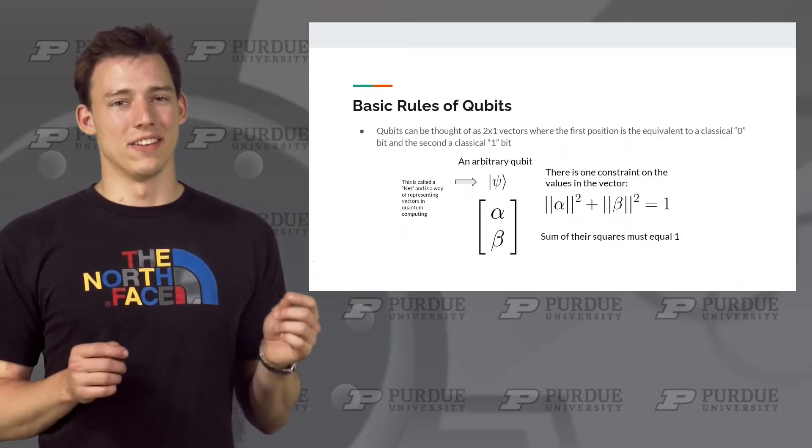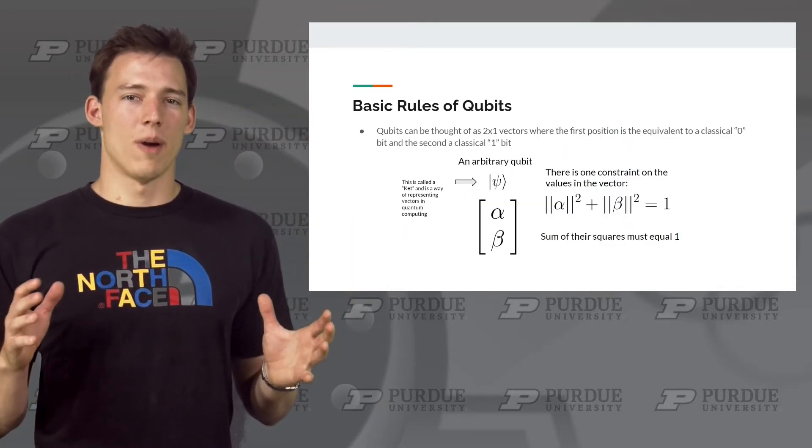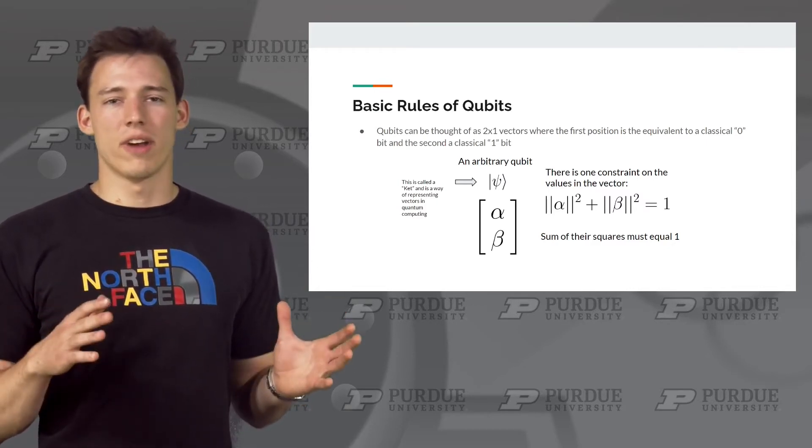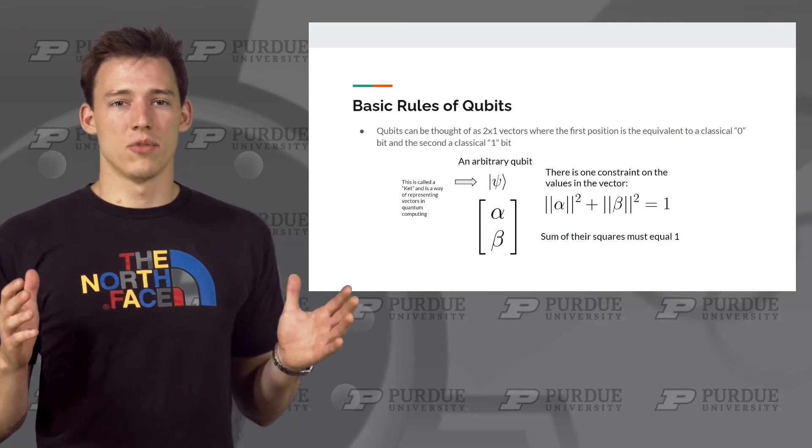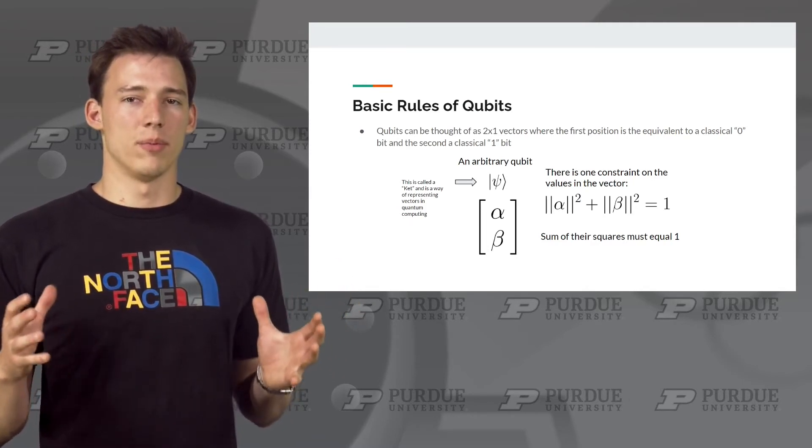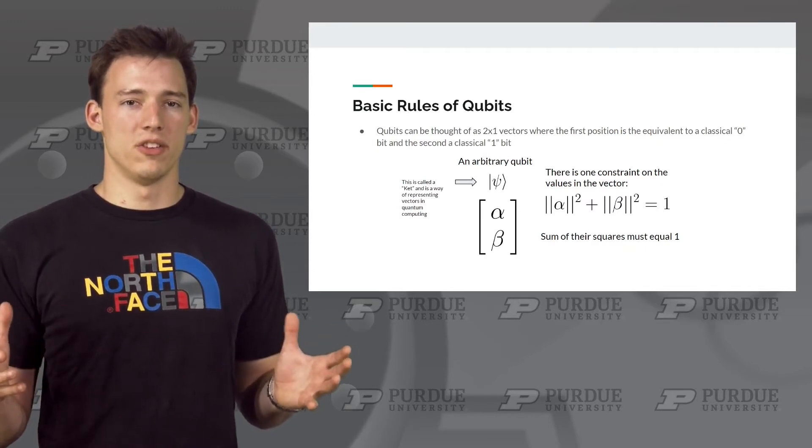In the last video on qubits, link in the top corner, we learned about how we can represent a qubit state using a vector of two numbers called amplitudes. The one constraint on these amplitudes is that the sum of them squared must be equal to 1. This constraint is due to the fact that the square of an amplitude is a probability, and all probabilities must sum to 1.